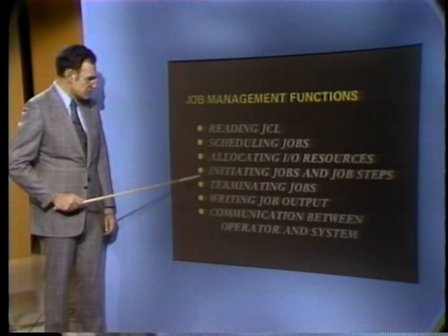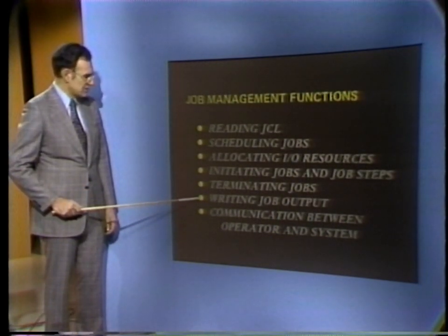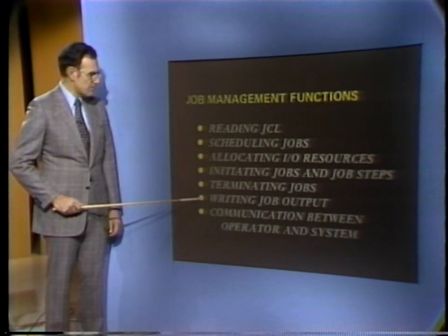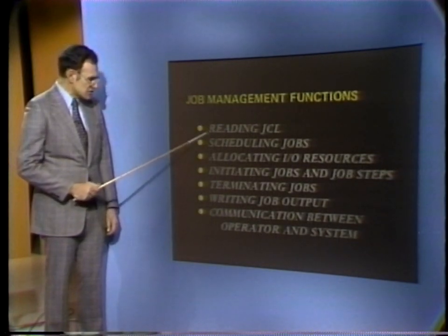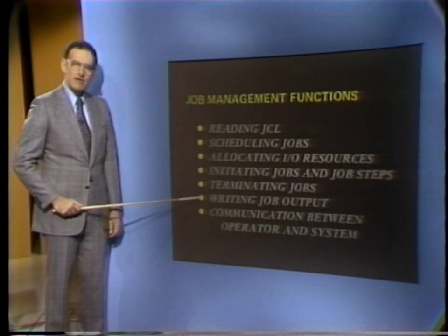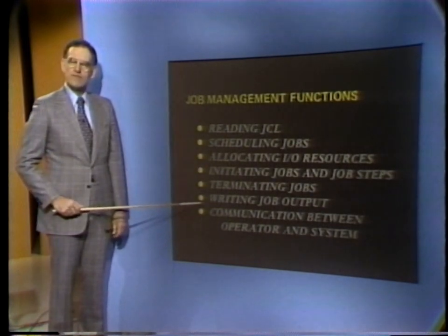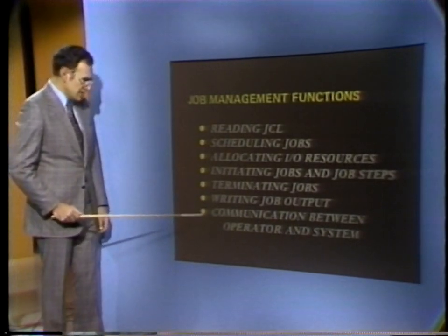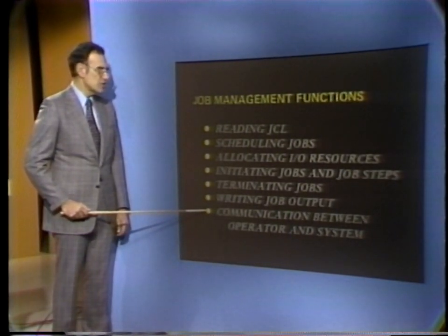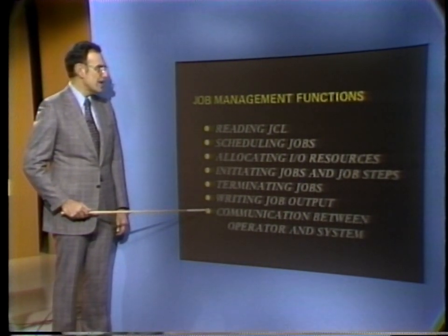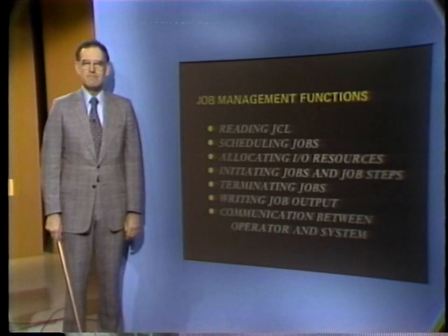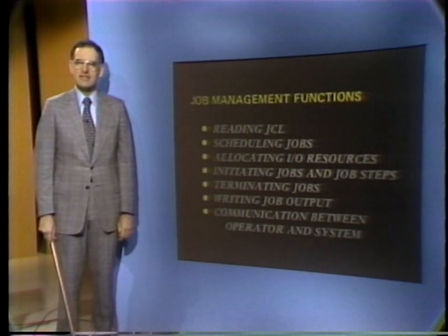All of these functions make up what is called a job processing cycle. Every job processed by the system passes through these steps. Later on in the videotape, we will follow a job through the job processing cycle. Finally, job management is also responsible for handling two-way communication with the operator. Commands issued by the operator are executed and messages issued by the system are displayed at the console.